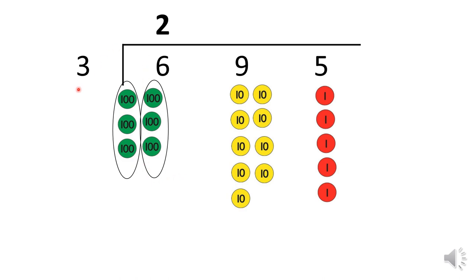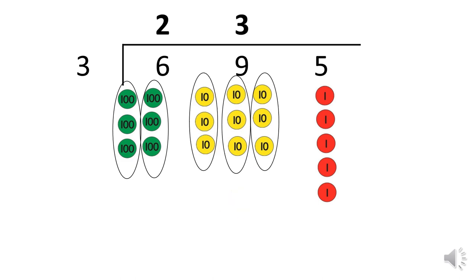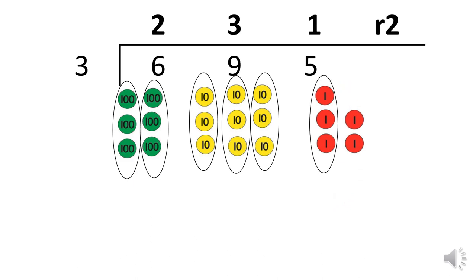How many groups of three can I make out of nine tens? I can make three groups. I put the answer up here. How many groups of three can I make out of five ones? I can make one complete group and have two left over. I show that by putting the remainder two up here.